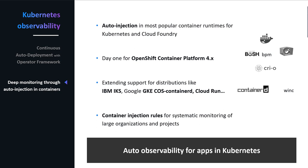We've also been working on increasing footprint across container environments. Docker has been around for a while, but we now have other popular container runtimes. CRI-O is one of those investments, which gives us day-one support for OpenShift 4 environments, because OpenShift switched to the CRI-O container runtime. We also support containerd, which allows us to deep monitor managed Kubernetes offerings that run with containerd as the underlying runtime.